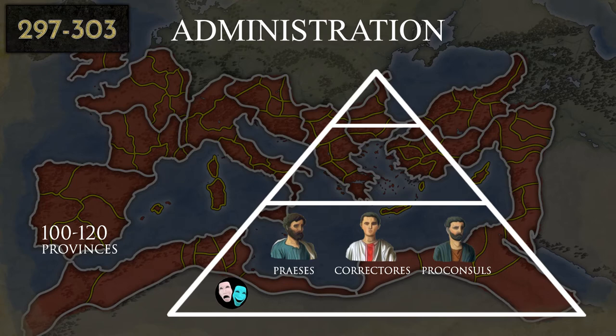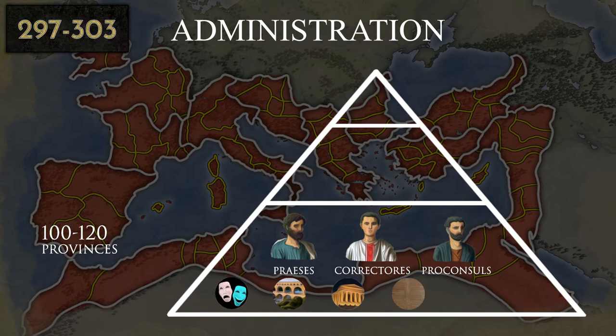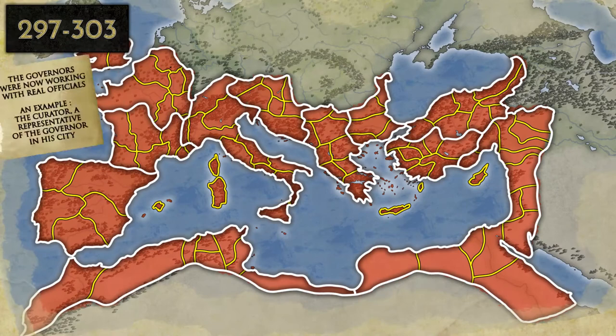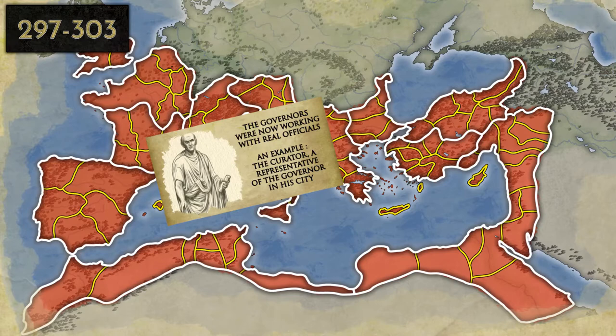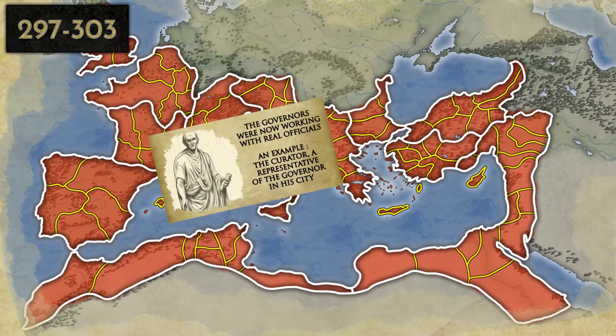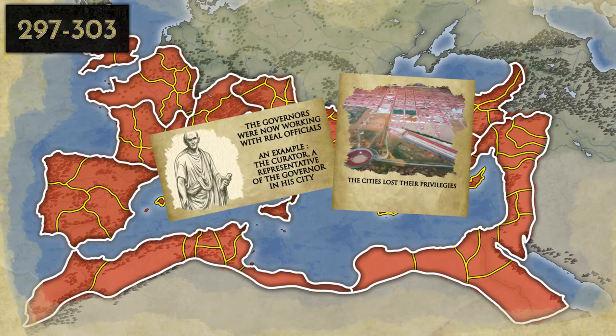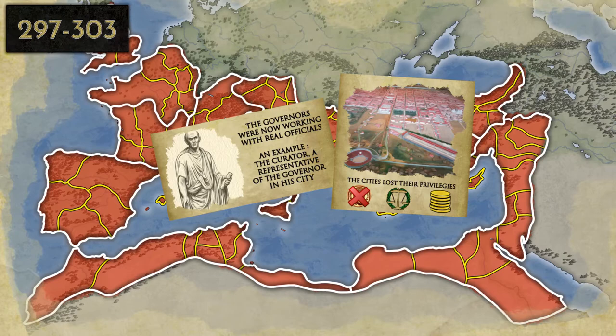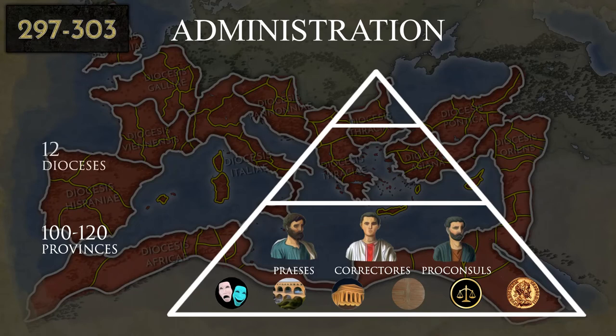Governors held powers over public order conservation, public services management, laws publishing, imperial decrees enactment, judicial power, and tax collection. They were no longer able to surround themselves with friends or clients as under the Principate or the Republic — they were now real officials. For example, a post of curator appeared, serving as the governor's representative in each city inside the province. Many privileges were withdrawn from cities: local coinage ended, they were obligated to adopt Roman law, and they lost their tax immunity.